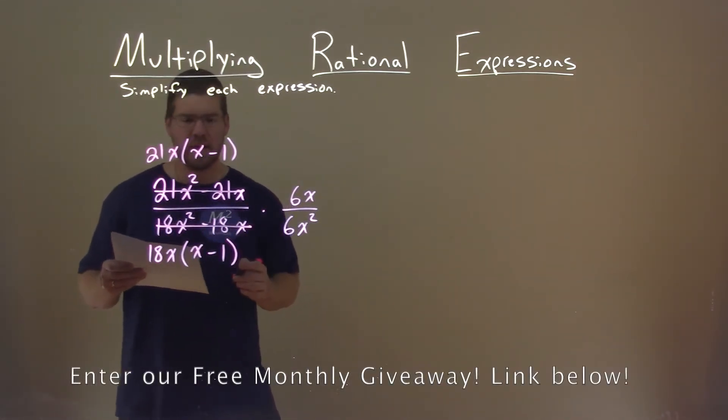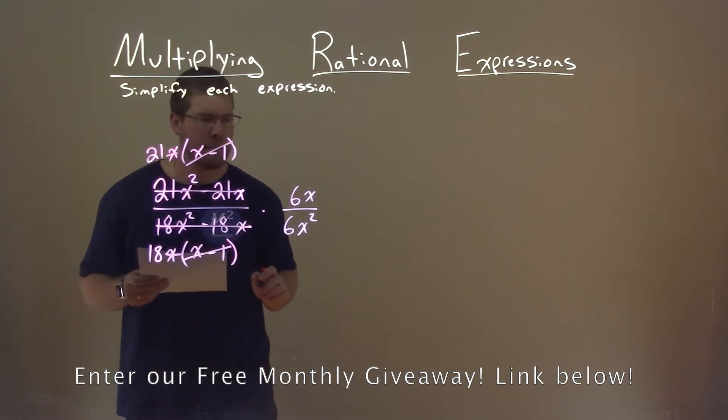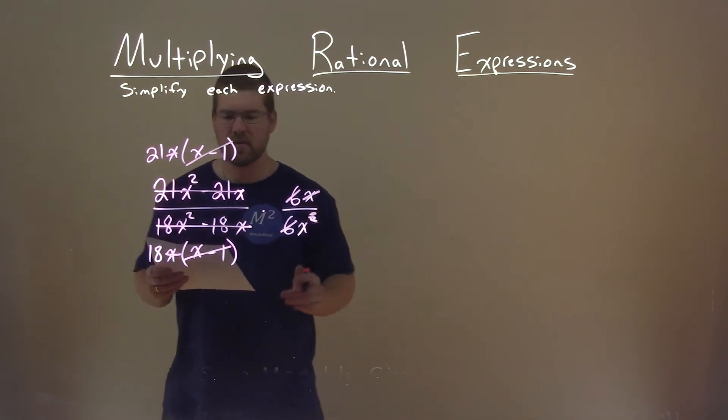So, let's cancel what we can. Clearly, I see an x minus 1 here. I see an x here. They're out. 6s cancel. This 1x and this x squared cancels.